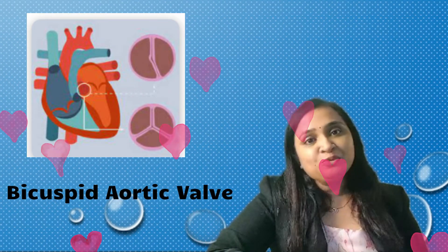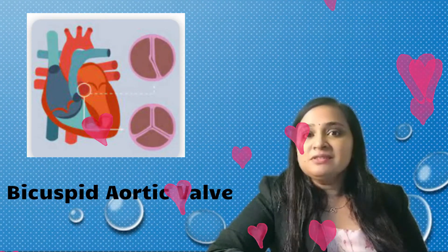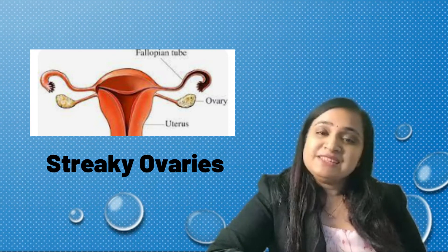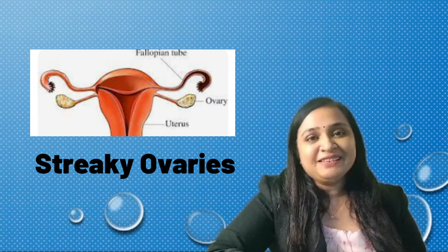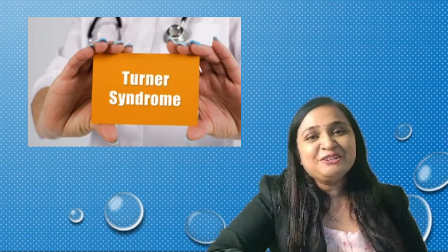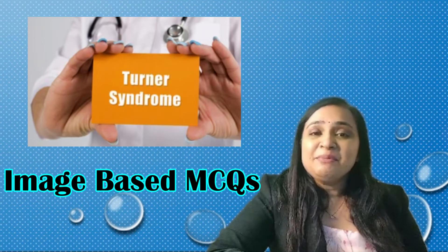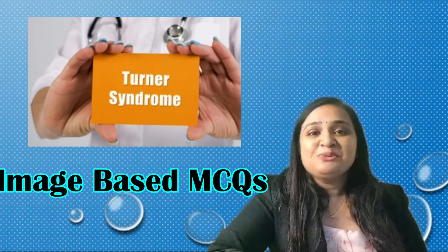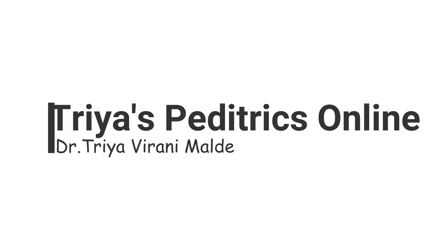Bicuspid aortic valve is the most common congenital cardiac anomaly associated with Turner syndrome, as well as the most commonly involved organs are ovaries in Turner syndrome. Welcome back to my channel — in today's video we are going to learn image-based MCQs as well as many facts about Turner syndrome. Do not skip anything, watch till the end.